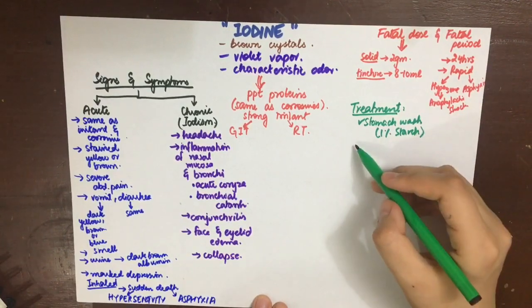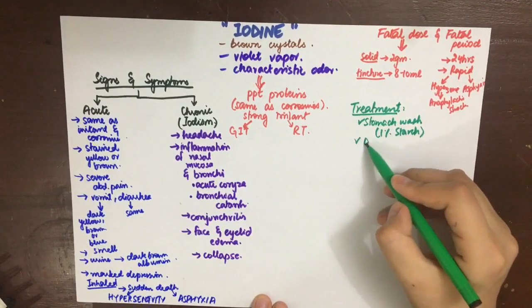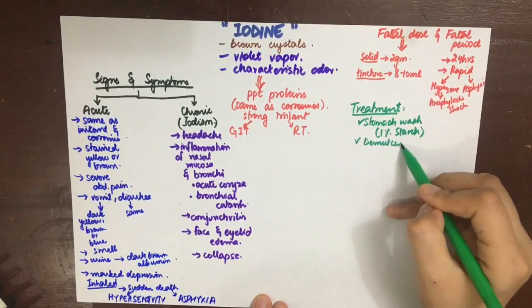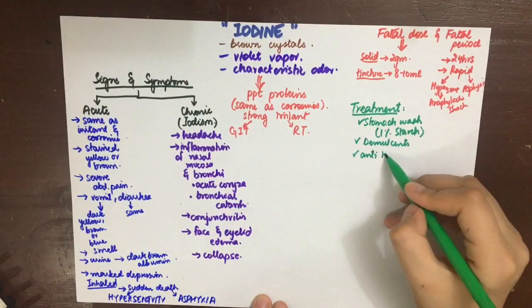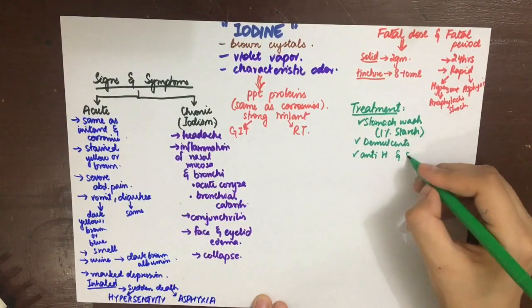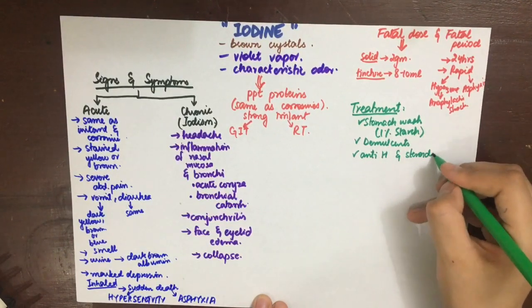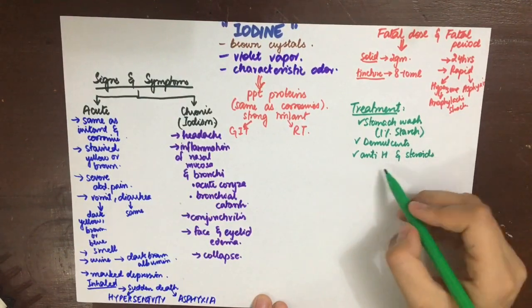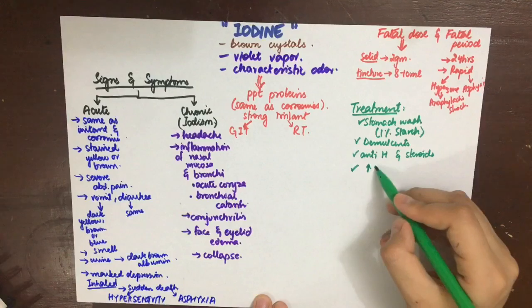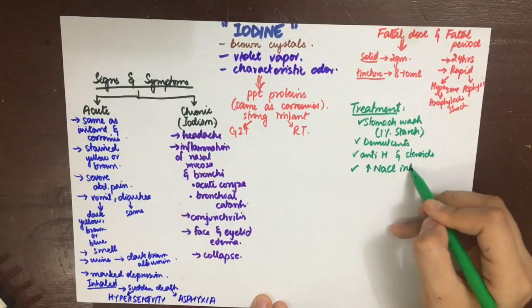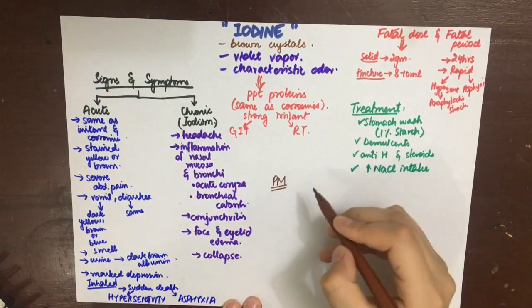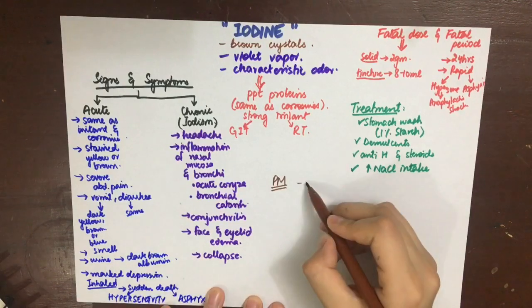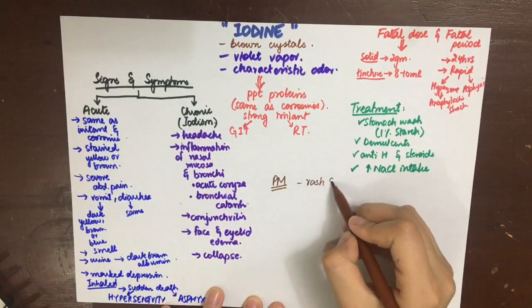Treatment of iodine poisoning includes stomach wash with 1% starch. Demulcents such as milk and fatty substances should be given. Antihistamines and steroids should be given for hypersensitivity reactions, and increased NaCl intake speeds up recovery.